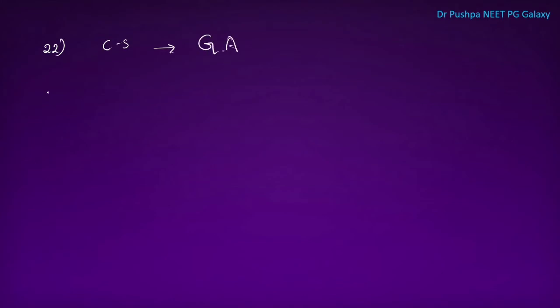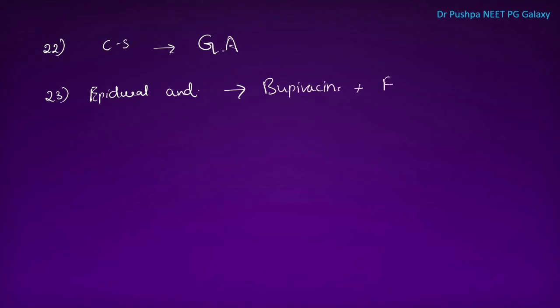The technique of choice for elective caesarean section in coarctation of aorta is general anesthesia. The ideal choice for epidural analgesia during labor is bupivacaine plus fentanyl.